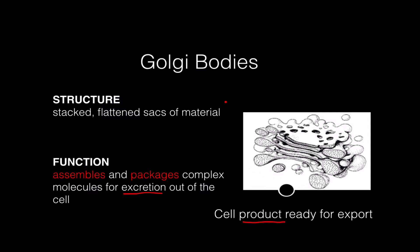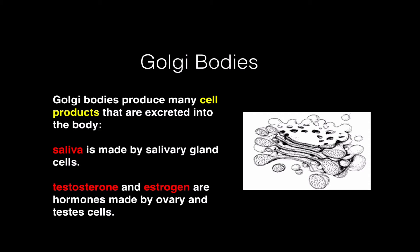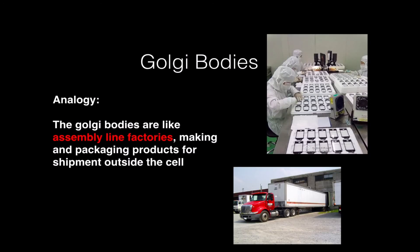This is how cells make material. Golgi bodies produce many of the products that are excreted into the body. For example, your salivary glands contain cells that are packed with Golgi bodies that are making saliva. Your ovaries, if you're female, or your testes, if you're male, are producing hormones called testosterone and estrogen, which are secreted by these cells because these cells are packed with Golgi bodies.